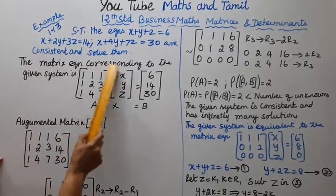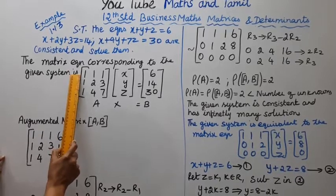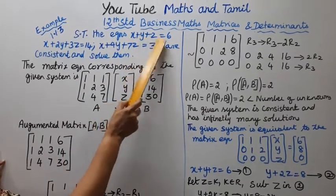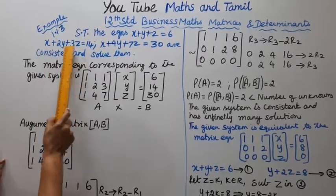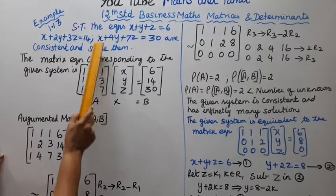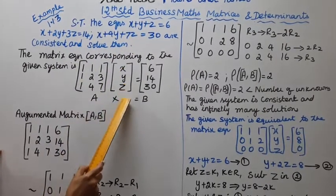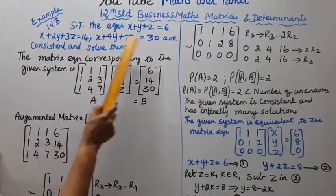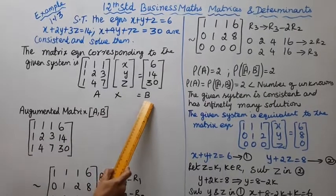Now the matrix equation corresponding to the given system is: if there is no coefficient, x, y, z gives row [1, 1, 1]. For x plus 2y plus 3z the row is [1, 2, 3]. The constants b are 6, 14, 30. We will set up the augmented matrix [A|b].